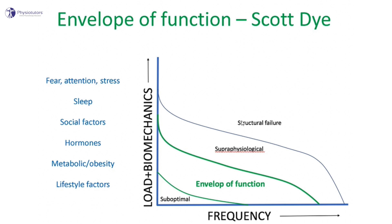The envelope of function by Scott Dye beautifully summarizes the risk factors involved in the etiology of tendon pain. The envelope of function is the load-frequency distribution defining the safe or homeostatic range of load acceptance. If the combination of load and frequency exceeds your envelope of function, it will lead to pathology. Suboptimal loading may also lead to disuse effects, which is especially a problem in tendons. Peter Malares adds that biomechanics can directly influence the load in this graph, while systemic and individual factors influence an individual's propensity to develop pain.